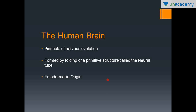The human brain is the pinnacle of nervous evolution — from the simple mesh-like network in cnidarians to the ganglia, and ultimately we have this human brain, because of which we exist, we think, and everything we do. It is formed by folding of a primitive structure called the neural tube. The brain is ectodermal in origin, as is the neural tube. There are three germ layers: ectoderm, mesoderm, and endoderm.